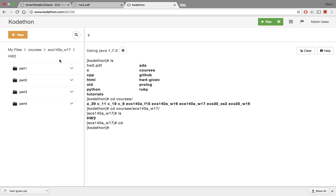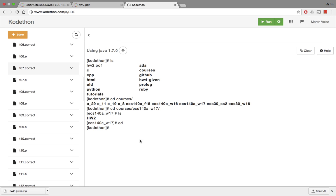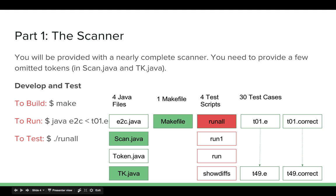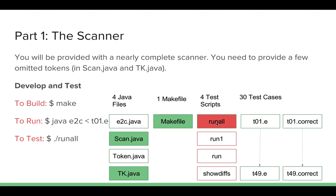When I open homework2 there are four parts. Let's click on part one. You can see there are a lot of files — don't let this overwhelm you. That's another purpose of this video, to break this down for you. In part one, there are four Java files which make up the program, a makefile to build the program, four test scripts — and out of these you're usually only going to use run_all — and there are 30 test cases used by the test scripts.